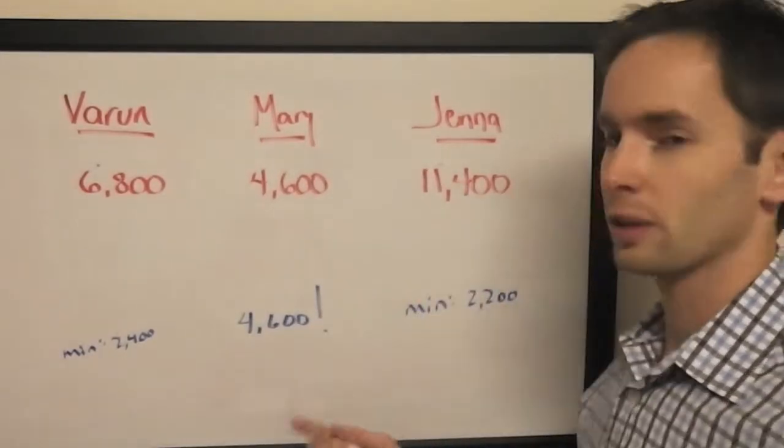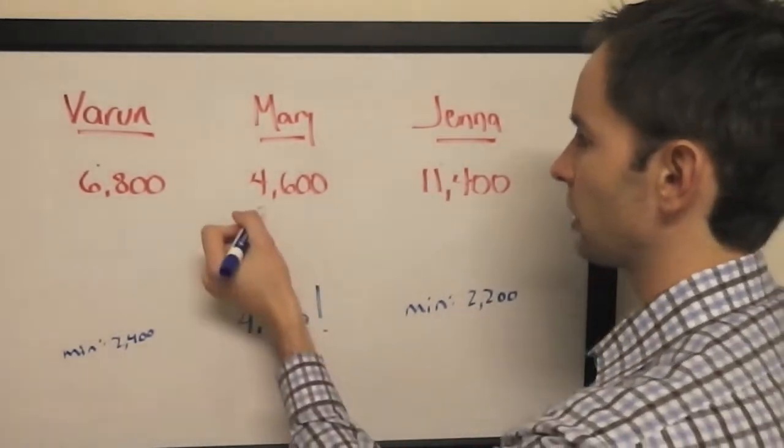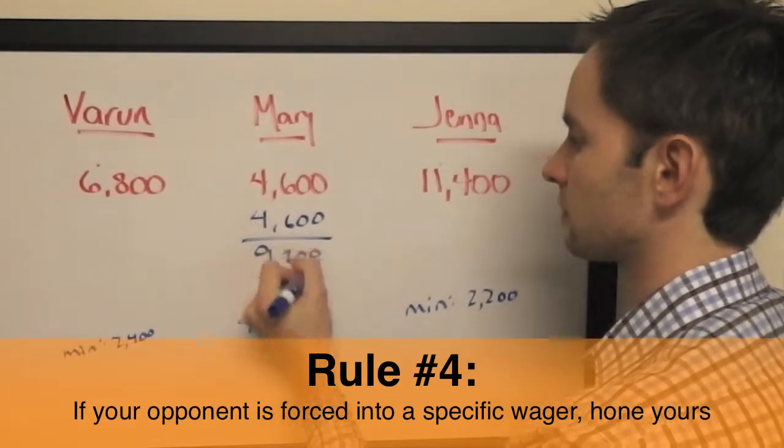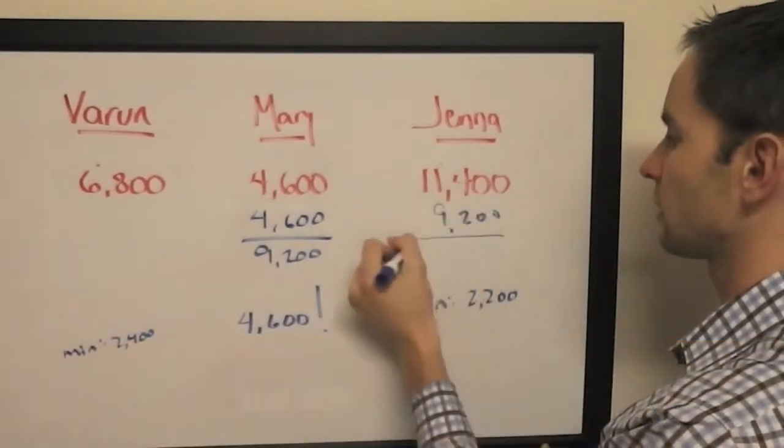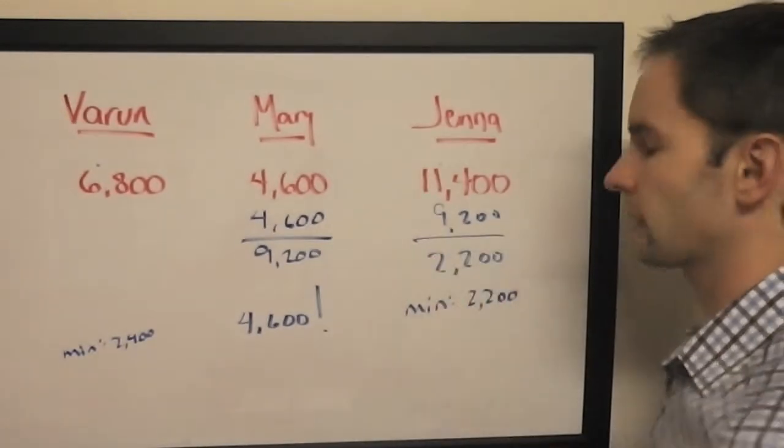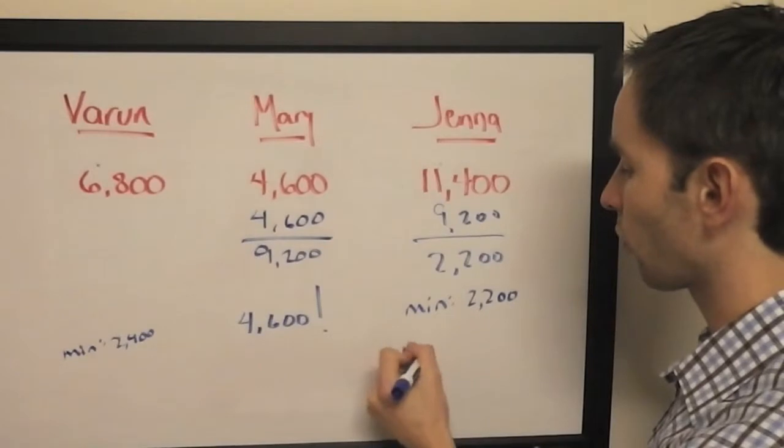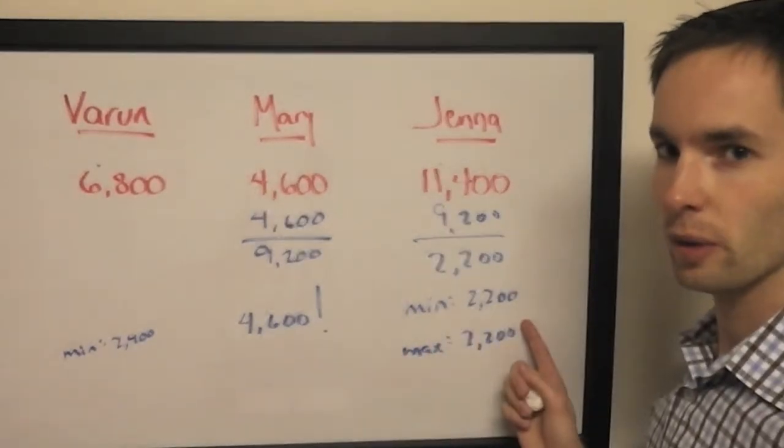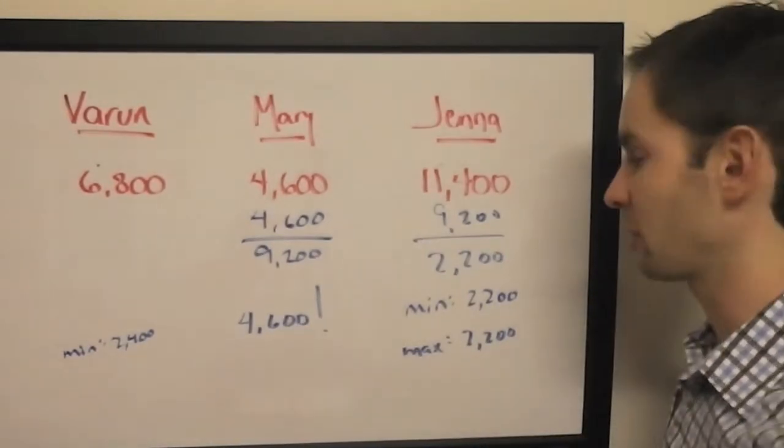Now Rule #4 says that if someone's forced into a wager, you want to reevaluate what you're going to do. If Mary doubles up, she's going to have $9,200. It's exactly $2,200 less than what Jenna has. That means Jenna can wager no more than that. She has to wager at least $2,200 and no more than $2,200. Therefore, she has to wager $2,200.